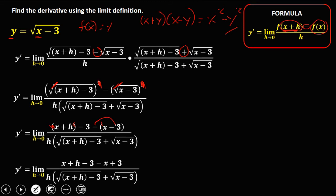Copy the denominator, then combine like terms in the numerator. We have positive x and negative x — they cancel, that's 0. Then minus 3 and positive 3 — they cancel, that's 0. So after combining like terms, only h remains in the numerator.